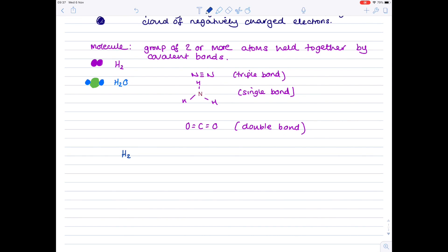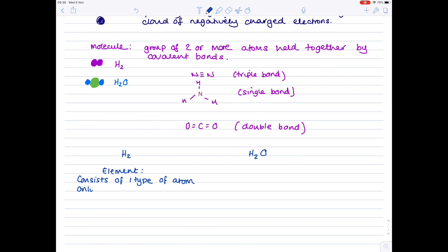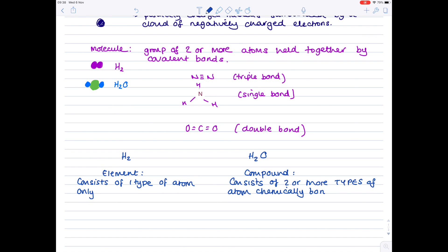Focusing in a little bit more on our hydrogen-water examples. Hydrogen is an element because it consists of one type of atom only. Water is a compound because it consists of two or more types of atom. And crucially, they are chemically bonded.